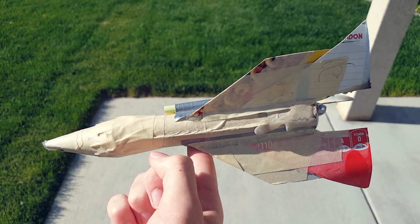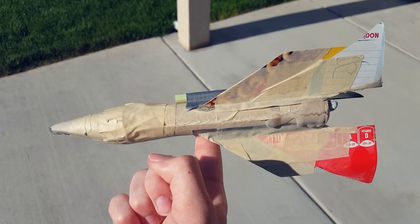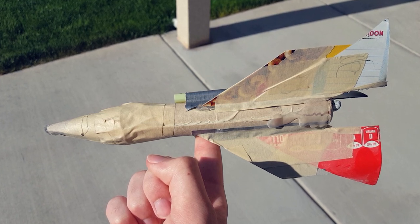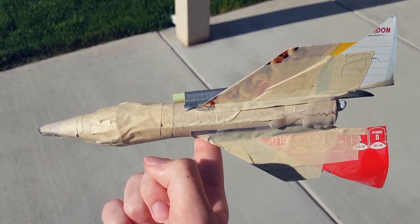Well, the center of mass is the point at which the rocket balances. It's the spot where you can balance the rocket on one finger. Make sure you're testing it with the rocket engine inside. That's slightly important.